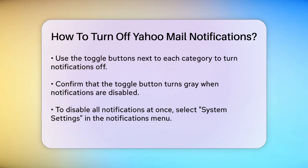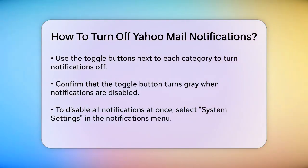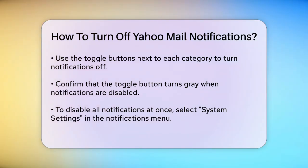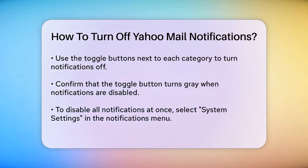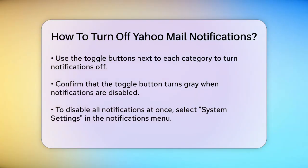When the toggle button turns gray, it means the notifications for that category are off. If you want to turn off all Yahoo Mail notifications at once, look for the System Settings option within the Notifications menu. Click on it, and then find the option that says All Yahoo Mail Notifications. There will be a toggle button next to it — click on it to toggle it off. This will turn off all notifications from Yahoo Mail.